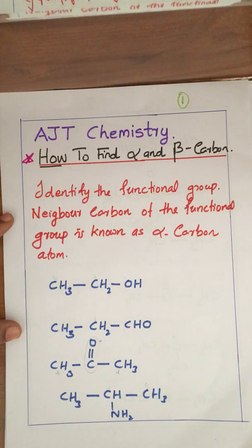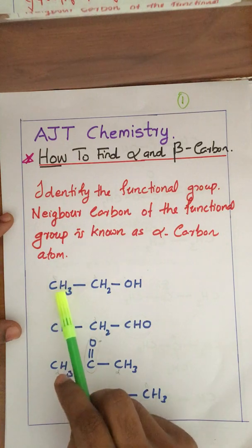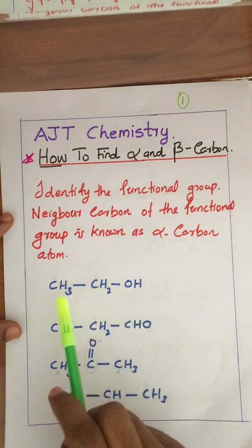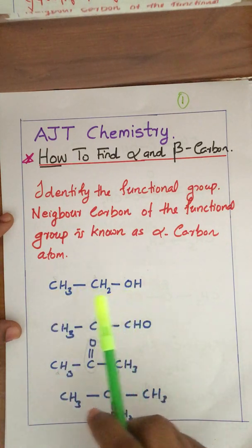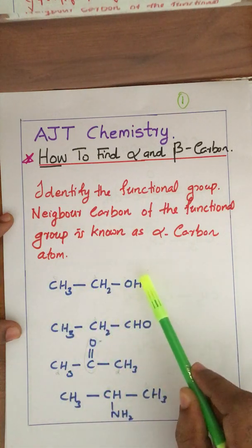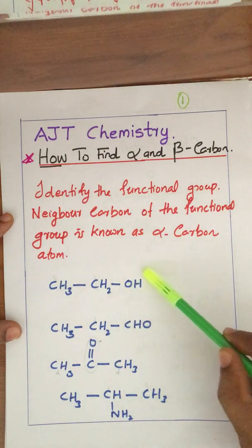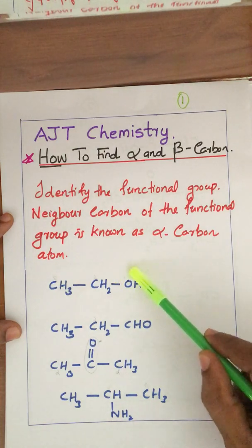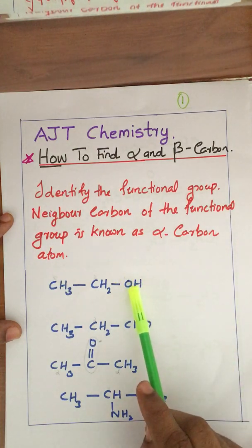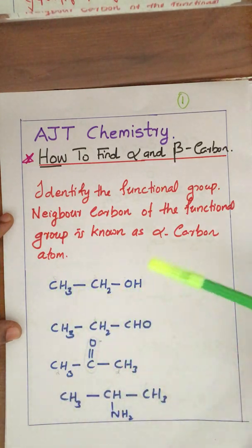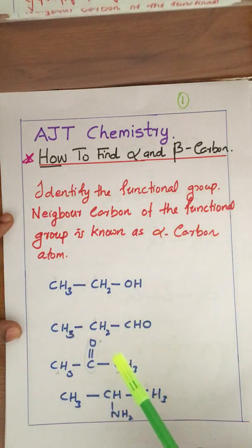How can you identify an alpha or beta carbon atom? Consider a molecule H3C-CH2-OH. This is an alcohol. The properties of this molecule are entirely decided by the OH group. This is known as the functional group — this group has a very important function in the molecule. In each and every organic compound, you can identify such types of groups.